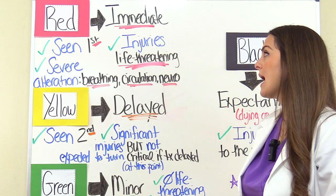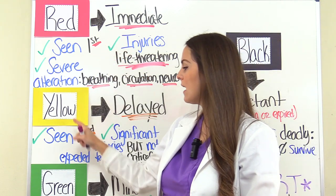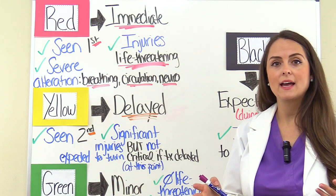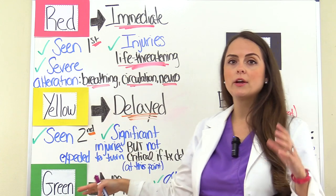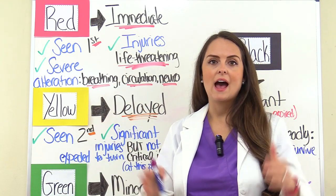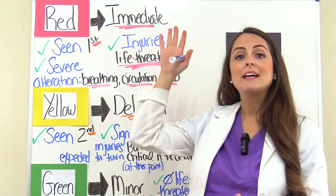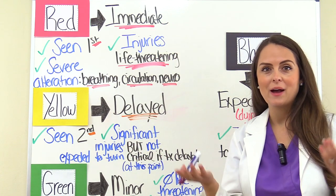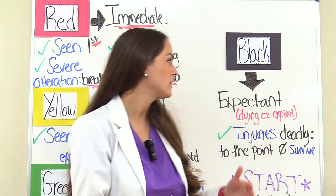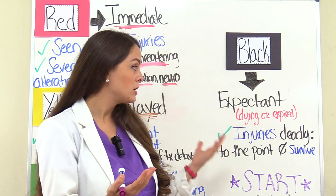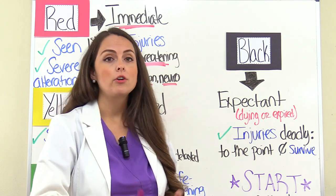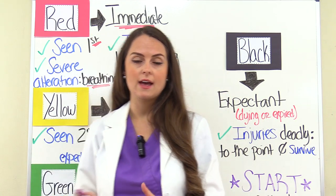We have four tag colors: red, yellow, green, and black. How I keep these separated — because a lot of people get confused with red, yellow, and green — is by remembering a traffic light and what you do at a traffic light. Black is easy to remember: that is the tag associated with a person who has died or is in the process of dying, because their injuries are unsurvivable. So black is associated with death.